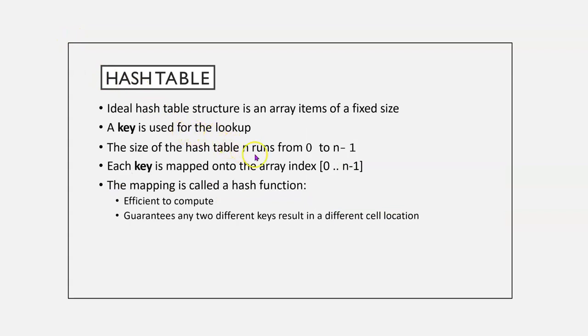The ideal hash table structure is an array of items of a fixed size. Use a key for the lookup. The size of the hash table, n, runs from 0 to n minus 1. So, it's a fixed array. Each key is mapped onto the array, 0 to n minus 1. The mapping is called a hash function.